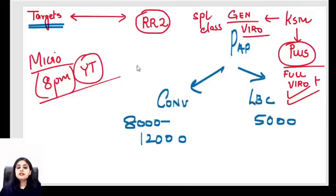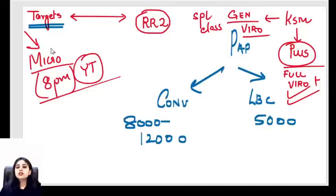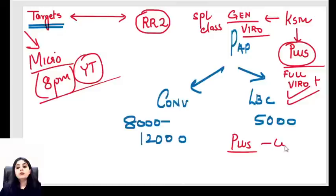Regarding anaplastic carcinoma thyroid: photos do not come for anaplastic carcinoma because the word itself tells you it is very bad-looking (anaplasia). You do not get pictures of anaplastic carcinoma thyroid in exams — be rest assured.